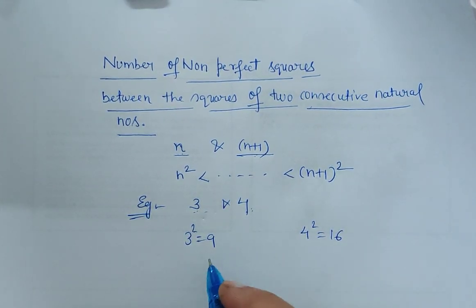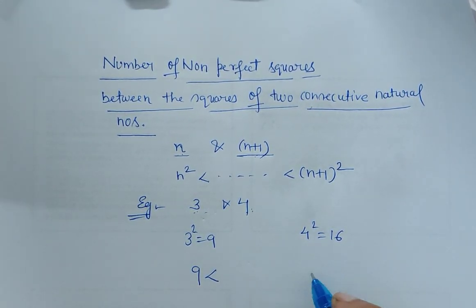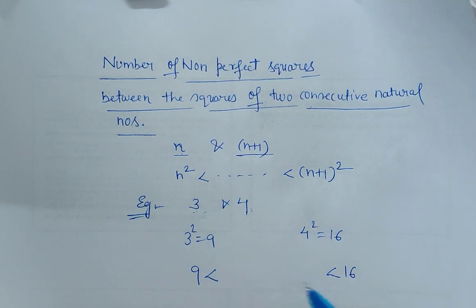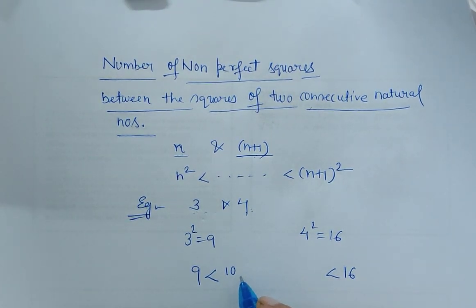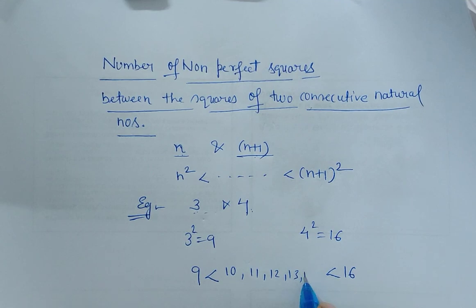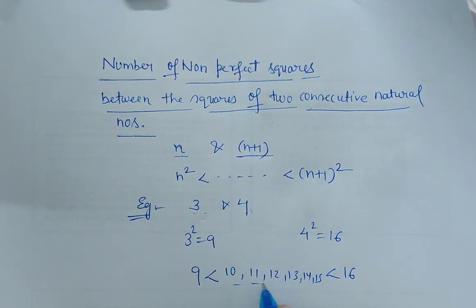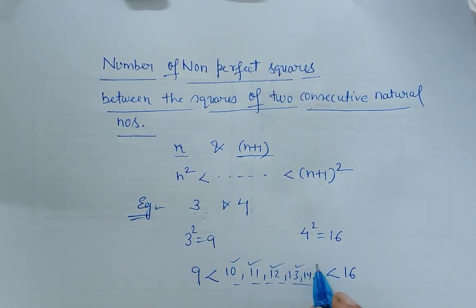What are all the numbers that lie between 9 and 16? We know 10, 11, 12, 13, 14, 15. These are all the numbers that lie between 9 and 16, and they're not perfect squares.